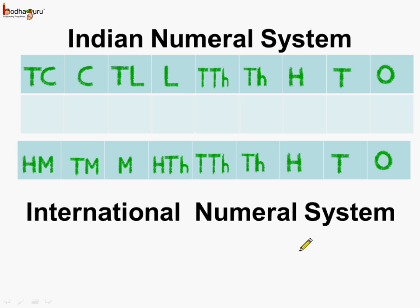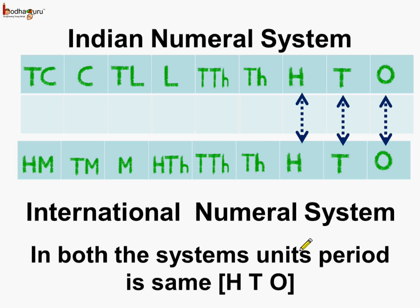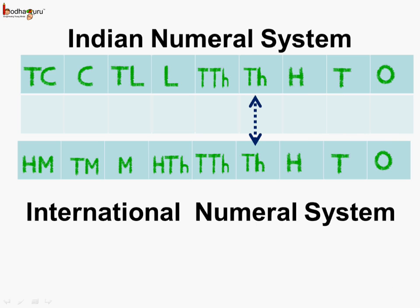Let us see the similarities. Ones, tens, and hundreds are called the same in both systems — the units group is the same. Both systems also share thousands and ten thousands places. The difference begins at the next place: in the Indian numeral system it is called lakh, which is actually hundred thousand, and it is called hundred thousand in the international system. So one lakh is equal to hundred thousand.